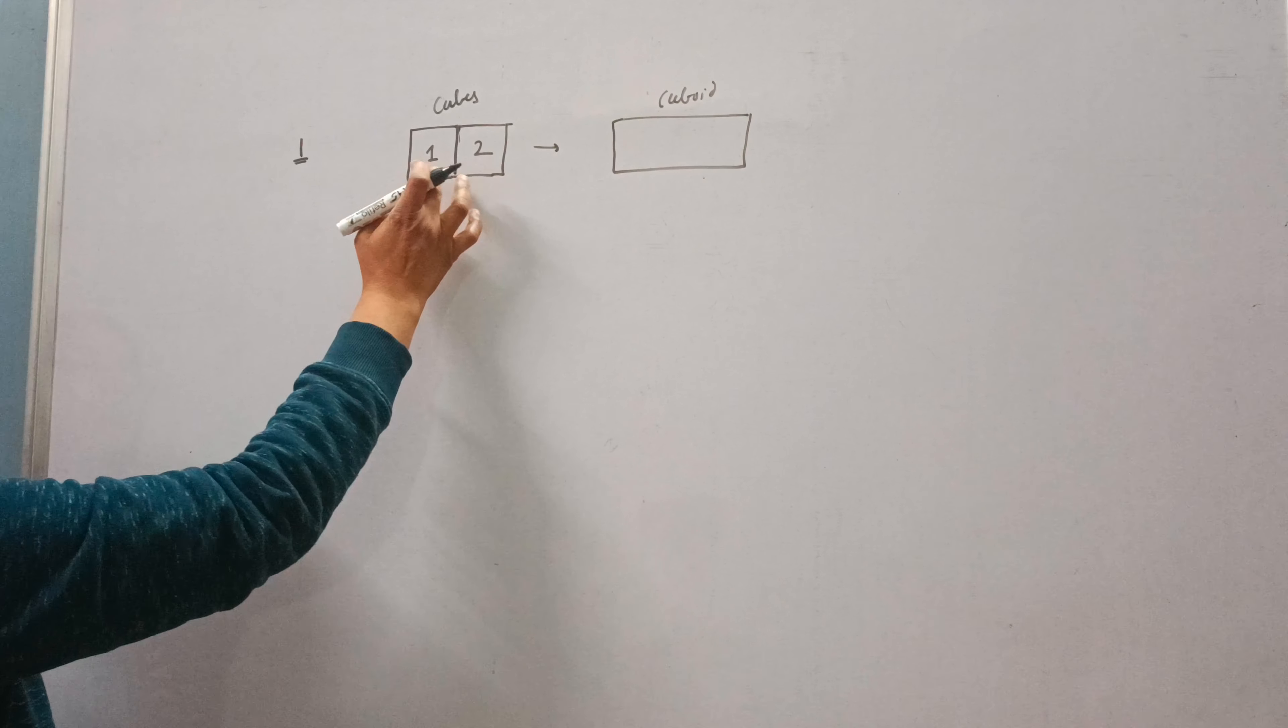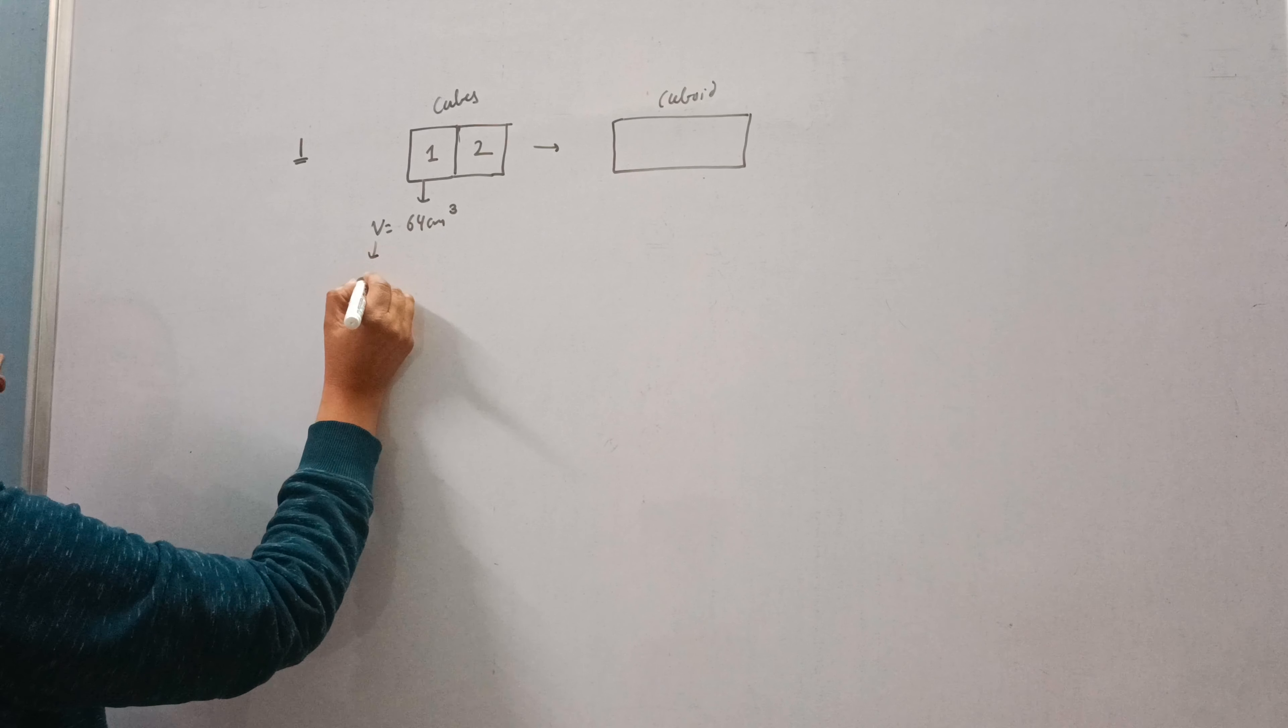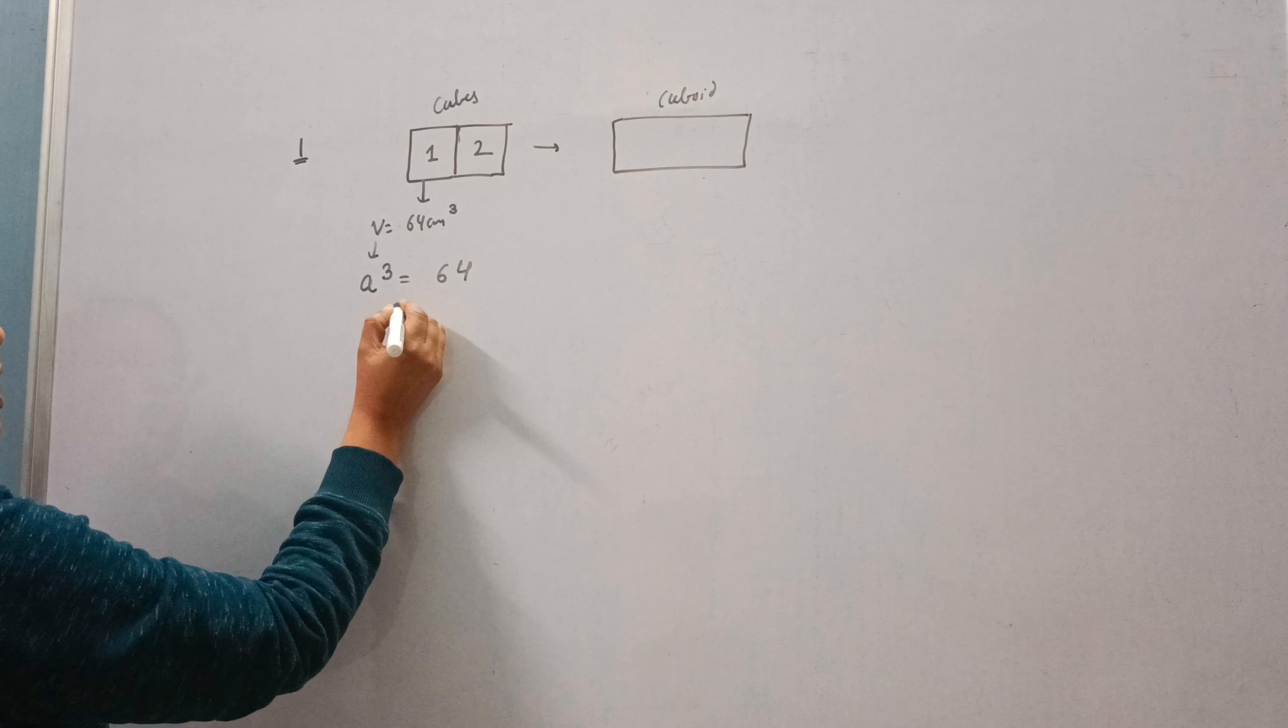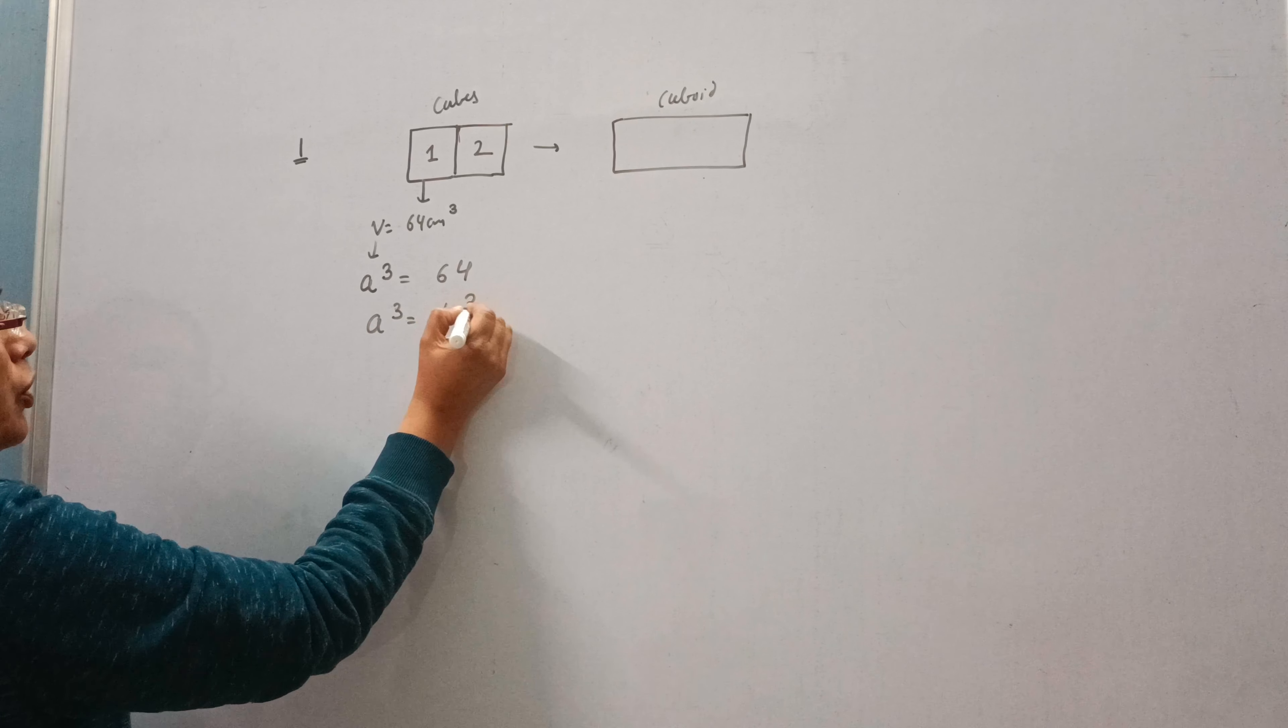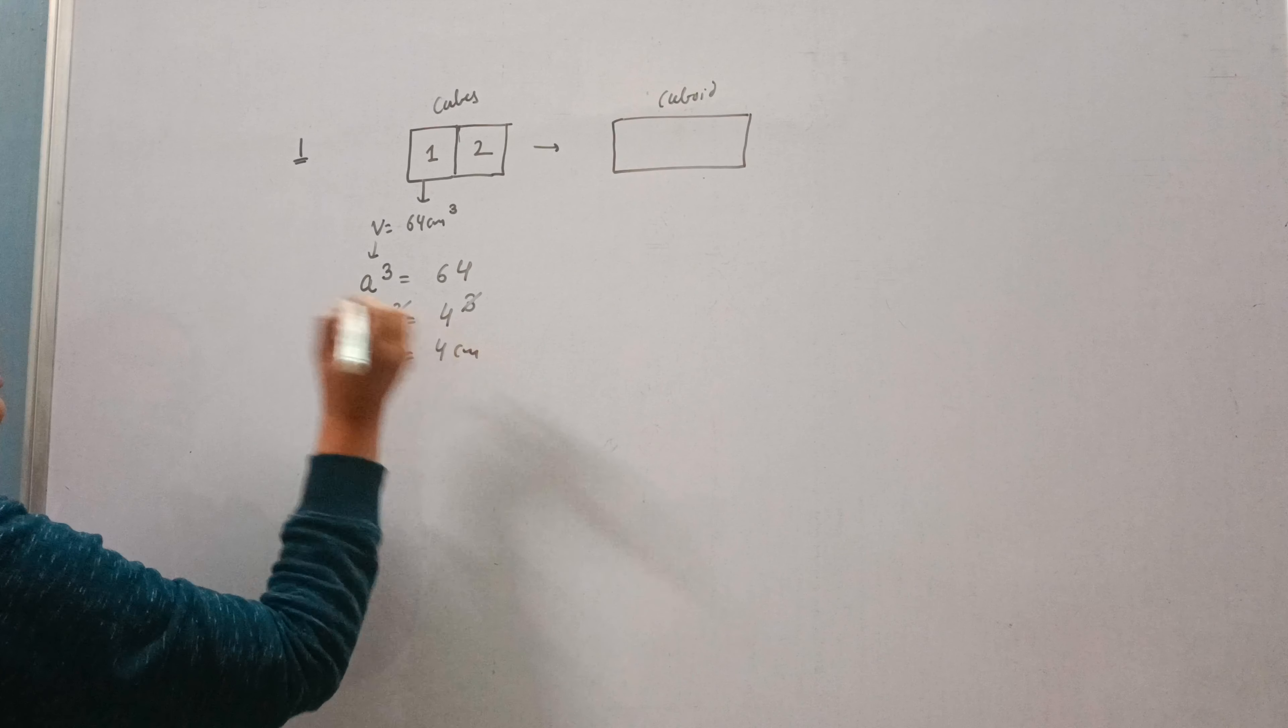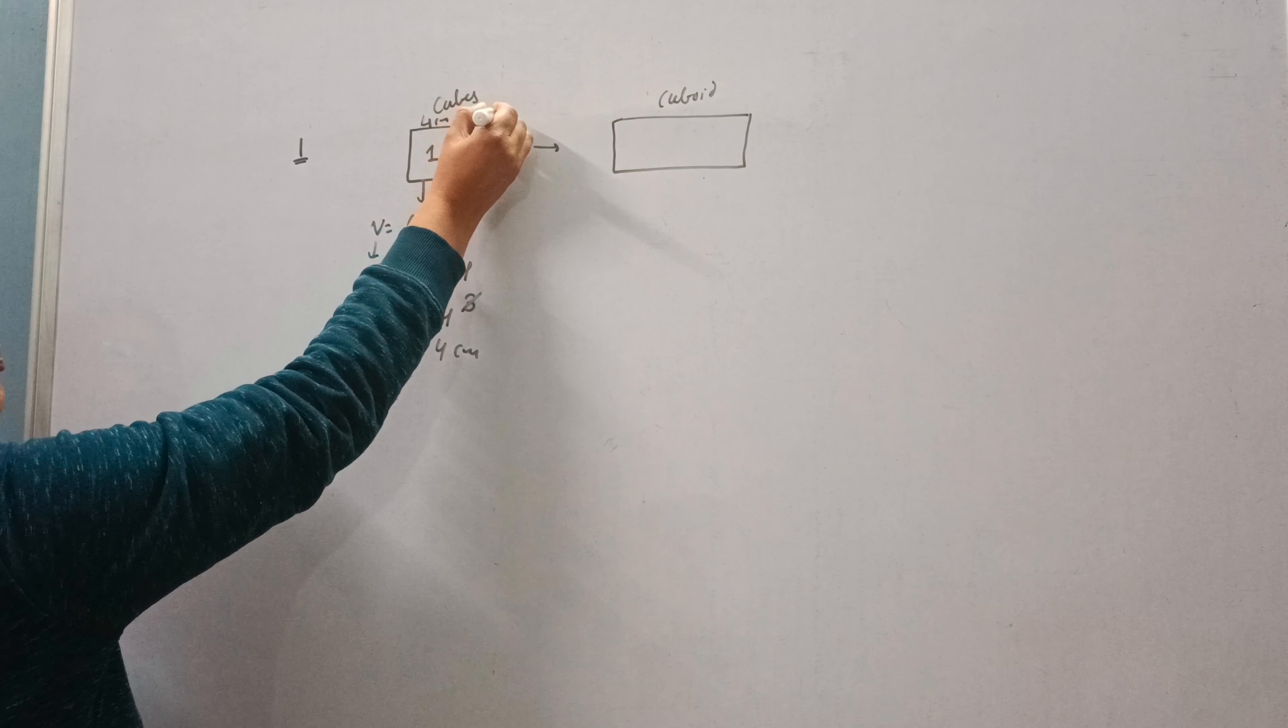Now see, volume of this cube is 64 and we know volume of cube is a³. So a³ is 64. 64 means cube of 4, so a is 4 cm. So the side of cube is 4 cm.